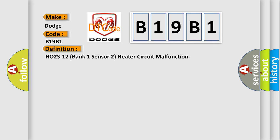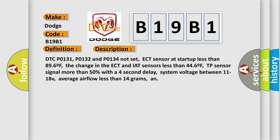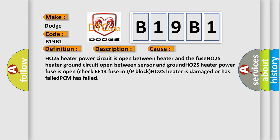And now here is a short description of this DTC code. DTC P0131, P0132 and P0134 not set; ECT sensor at start-up less than 89°F; the change in the ECT and IAT sensors less than 44°F; TP sensor signal more than 50% with a 4 second delay; system voltage between 11 to 18V; average airflow less than 14 grams. This diagnostic error occurs most often in these cases: HO2S heater power circuit is open between heater and the fuse; HO2S heater ground circuit open between sensor and ground; HO2S heater power fuse is open — check EF14 fuse in IOP block; HO2S heater is damaged or has failed; PCM has failed.